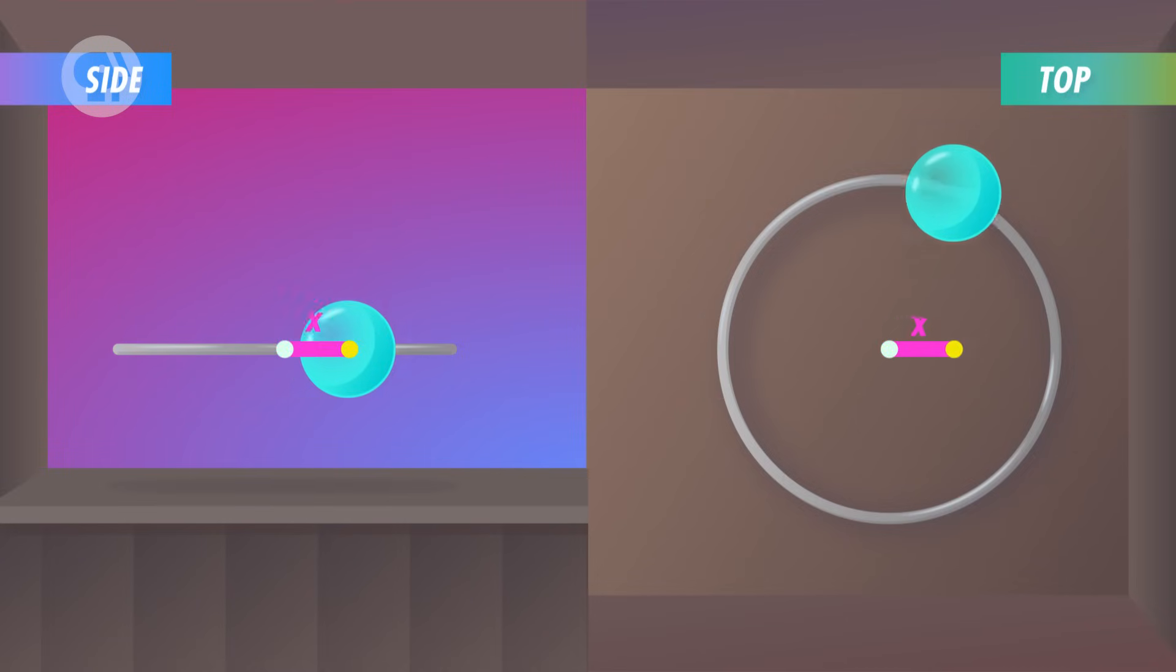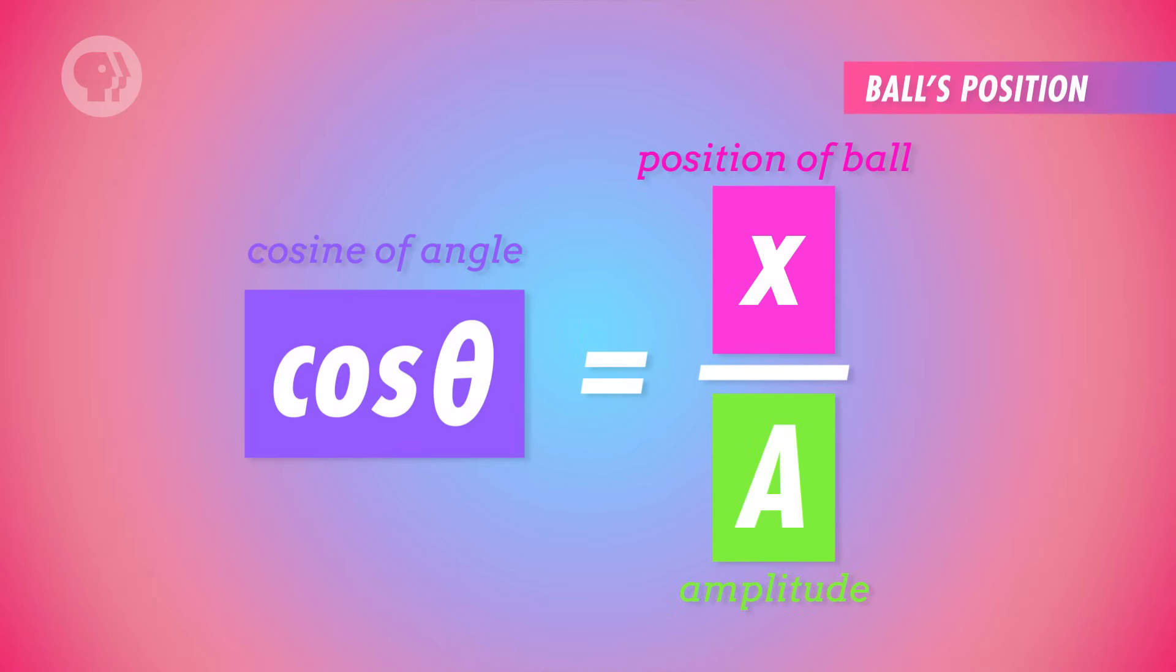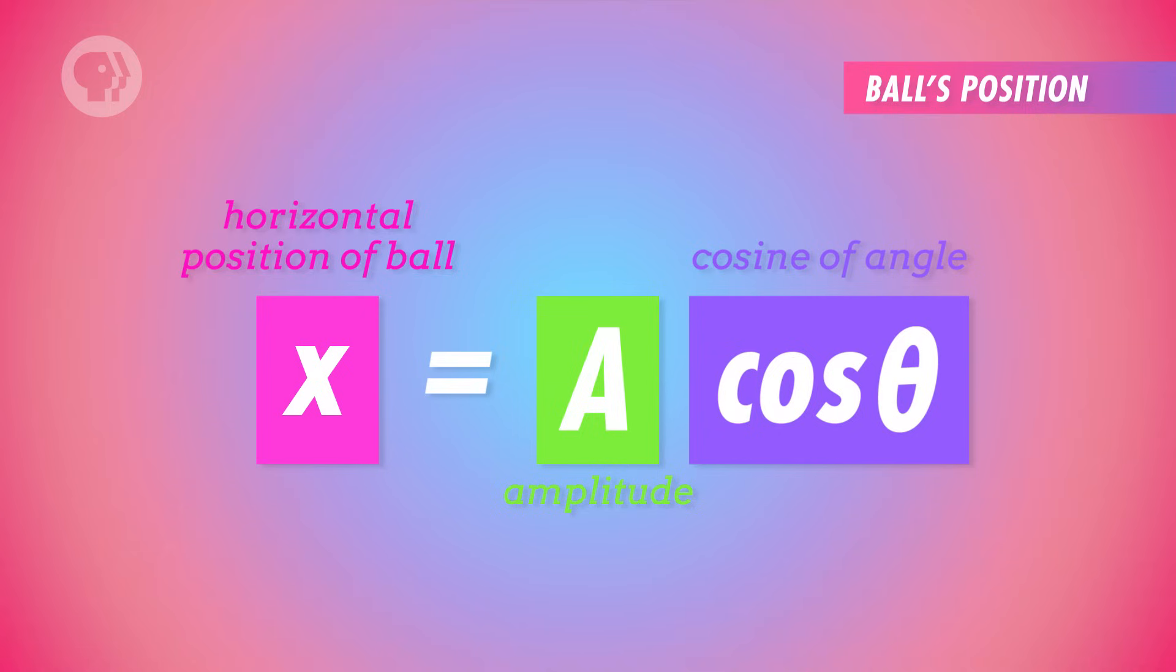We already know that the radius of the ring is the same as the amplitude of the ball's motion along the spring. And if you turn the ring so it looks like a line again, you can see that the marble's horizontal distance from the center of the ring is the same as the ball's distance from the equilibrium point. So the cosine of theta is equal to the ball's position divided by its amplitude. In other words, the ball's position is equal to the amplitude times the cosine of the angle.